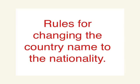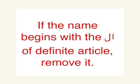In today's lesson, we're going to talk about rules for changing the name of a country to the nationality. It's really quite simple. The first rule is: if the name begins with the aleph lamb definite article, you need to remove it. There are some country names that begin with an aleph and a lamb, but it's only removed when it's part of the definite article.